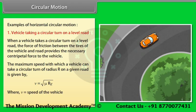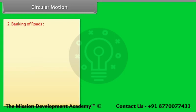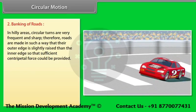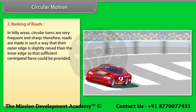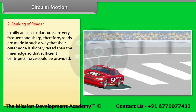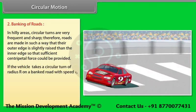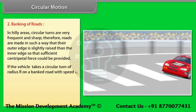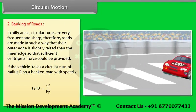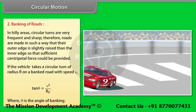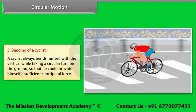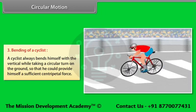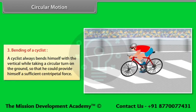Where V is the speed of the vehicle and μ is the coefficient of friction. Banking of roads: In hilly areas, circular turns are frequent and sharp, so roads are made with the outer edge slightly raised than the inner edge to provide centripetal force. For a banked road with radius R and banking angle θ: tan θ = V²/Rg. Bending of a cyclist: A cyclist always bends toward the vertical while taking a circular turn so that sufficient centripetal force is provided.